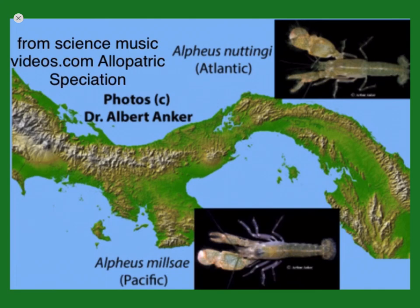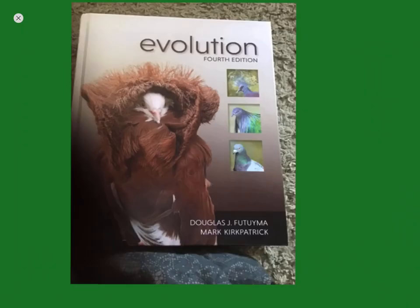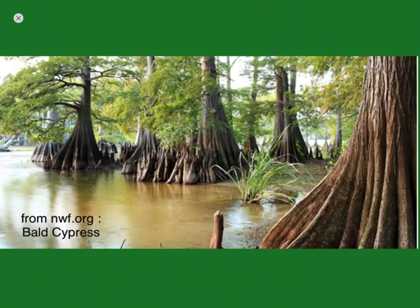One species of fish that became separated by the Isthmus eventually became two species of fish, and this happened to all the marine species that were separated by the Isthmus. This example is brought to you by Futuyma and Kirkpatrick's book, Evolution, 4th Edition.